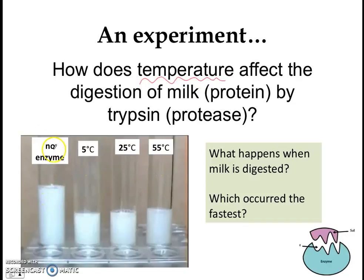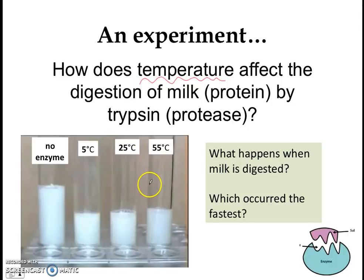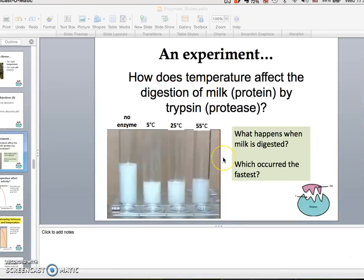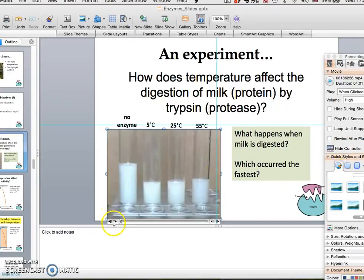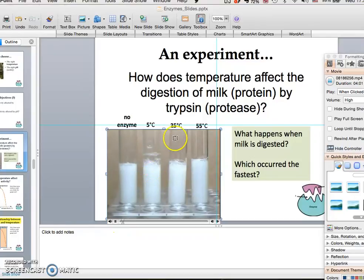In the first test tube, it's a control — there is no enzyme. But in the remaining three test tubes, you have trypsin as well. These test tubes are placed at different temperatures. Take a look at the video and see what happens as the milk is digested, and predict which one you think digestion will occur fastest in. Trypsin enzyme is added to each test tube containing milk protein at different temperatures: one at 5°C, one at 25°C, and one at 55°C.